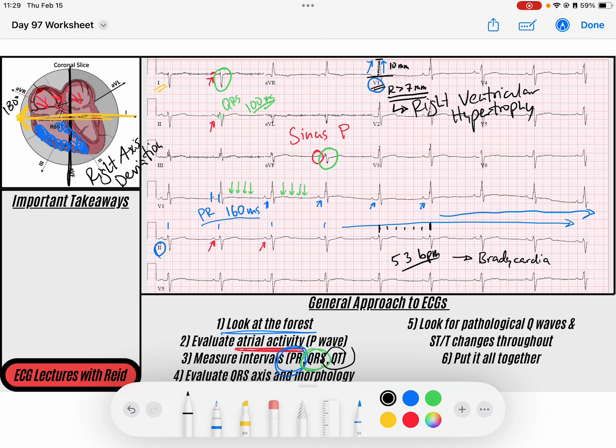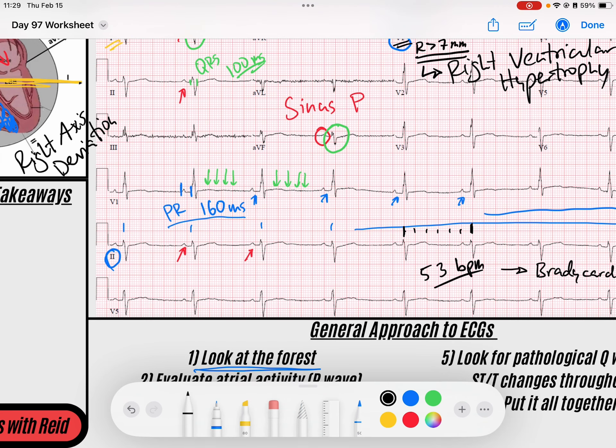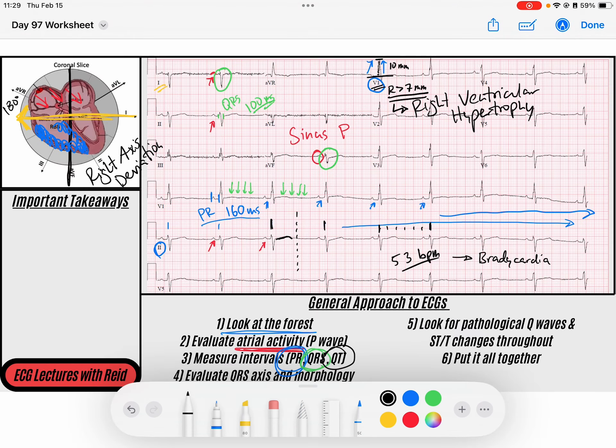Now let's look at our QT interval. My QT seems to be pretty normal here. If I take my R to R interval right down the middle, my T wave should be finished by then, and you see that that does appear to be the case. So I have a normal QT interval. And then I'm going to scan for pathological Q waves and ST or T wave changes throughout. I don't see any Q waves. You're going to see some repolarization abnormalities due to the ventricular hypertrophy, but nothing that is elevated or depressed that makes me concerned for any ischemic changes in any anatomical distribution.